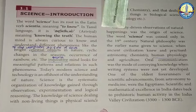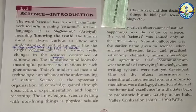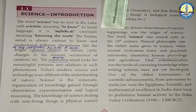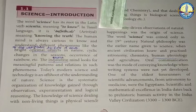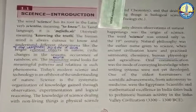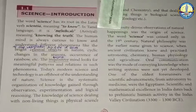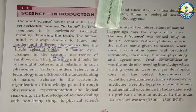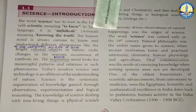The term 'natural philosophy' was important in the 19th century. Early humans were interested in astronomy, chemistry, human physiology, and agriculture. One of the oldest forerunners of scientific advancements ranged from astronomy to medicine. Scientific and mathematical excellence in India dates back to prehistoric human activity in the Indus Valley Civilization, around 3300 to 1300 BC.